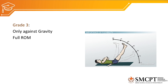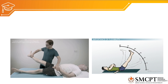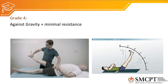Once the patient is able to perform hip flexion through the full available range of motion against gravity, we can add manual resistance by the therapist for grading higher than grade 3. Grade 4 means the muscle is able to function against gravity as well as against minimal resistance applied by the therapist, fulfilling the available range of motion.